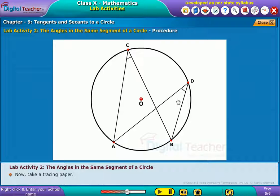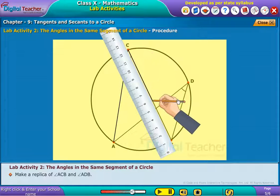Now take a tracing paper and place it on the white chart. Make a replica of angle ACB and angle ADB.